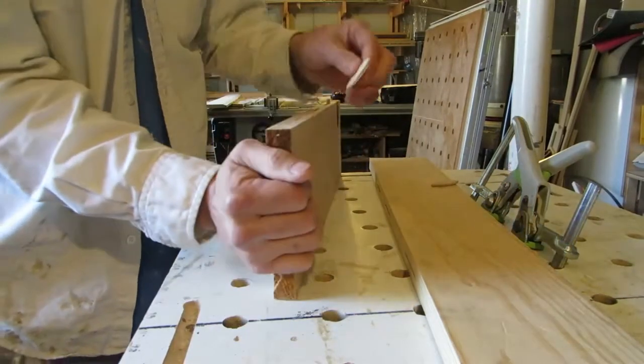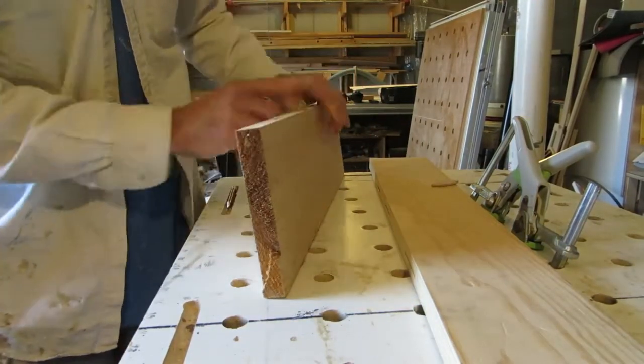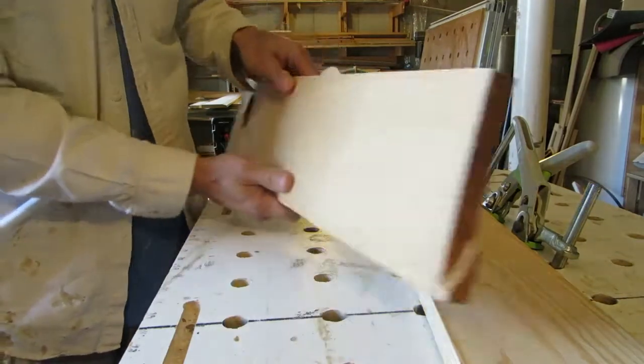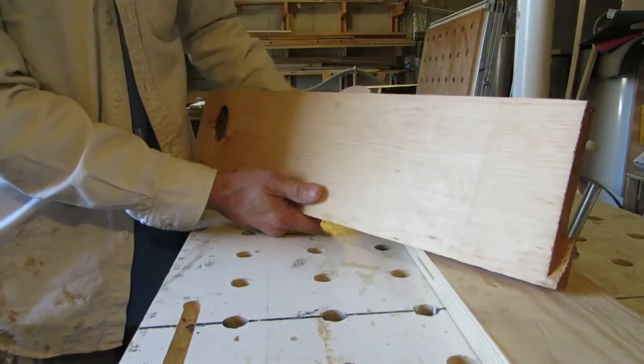You go to put a biscuit in, you're gluing it up, you put the glue inside the slot, putting it together, and then you realize you put a 20 where you should have had a 10.